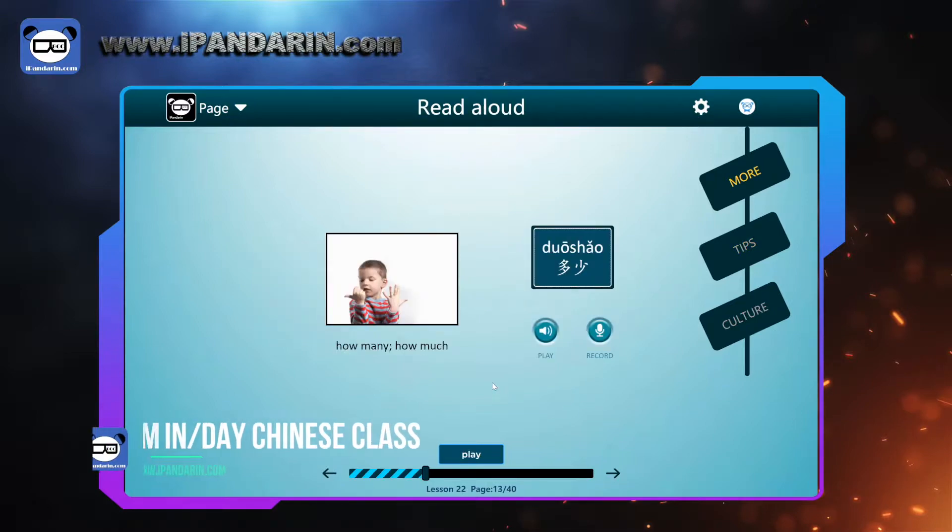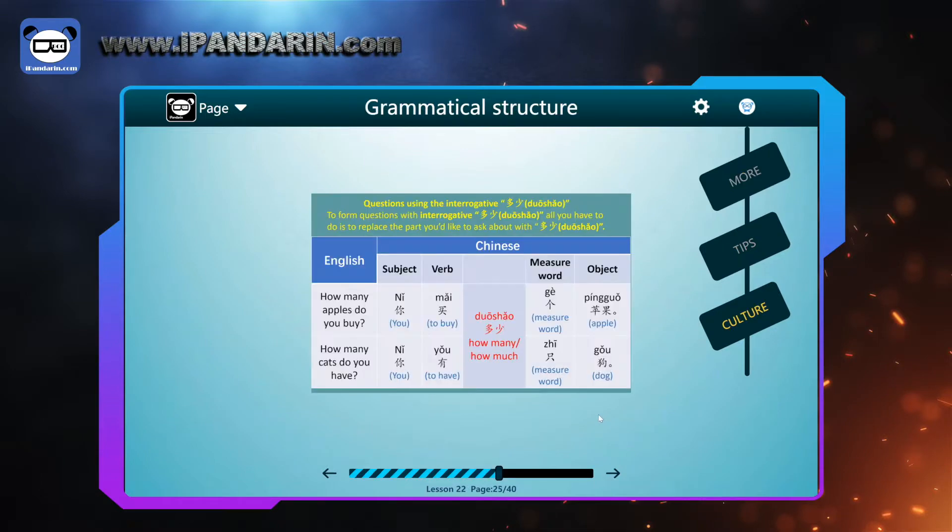Well, how many apples do you want to buy? We use 多少, how many, how much, to ask that. Speak after me. 多少. 多少. First and third tone again. 多少. We learned another how many and how much in former lessons. Yes. 几.